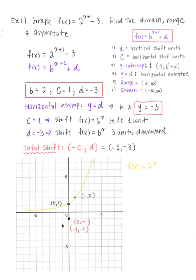We forgot the horizontal asymptote — sorry about that. The horizontal asymptote is at y = -3, so here is the line y = -3. Now let's connect those two dots and draw our final graph. This is our graph of f(x) = 2^(x+1) - 3.